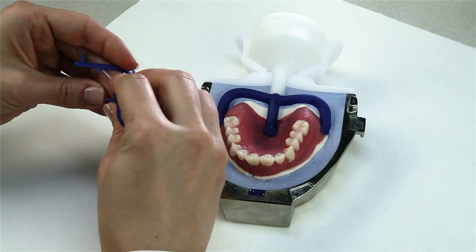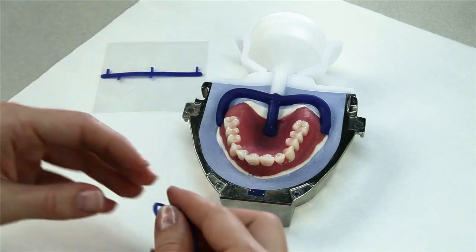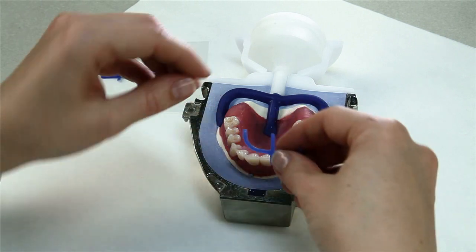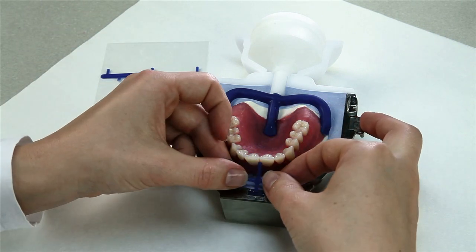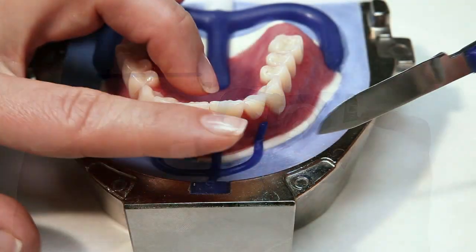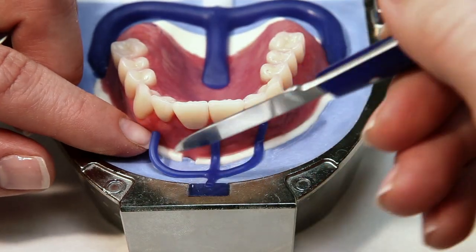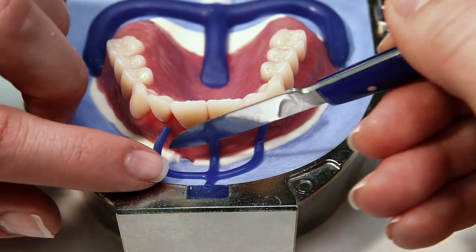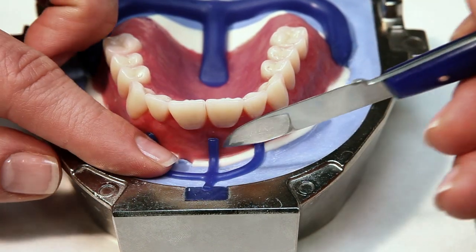In order to aerate the hollow space of the flask during injection, attach an aeration channel in the anterior region of all restorations. Place the complete wax components in such a way that there is a connection between the wax-up and the filter wax component.